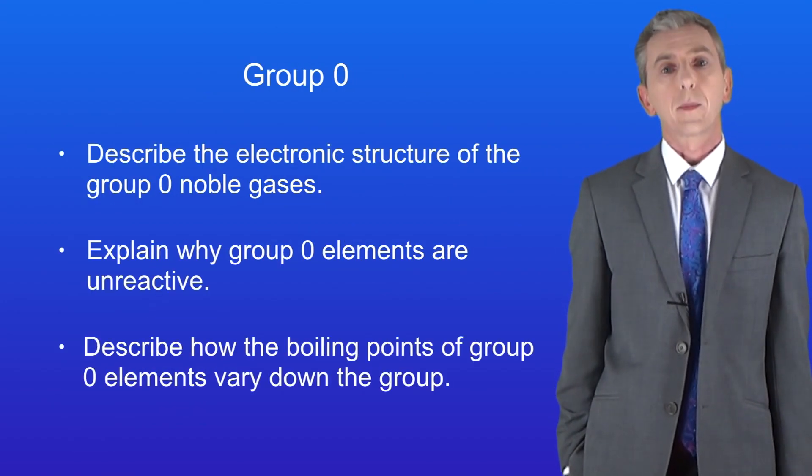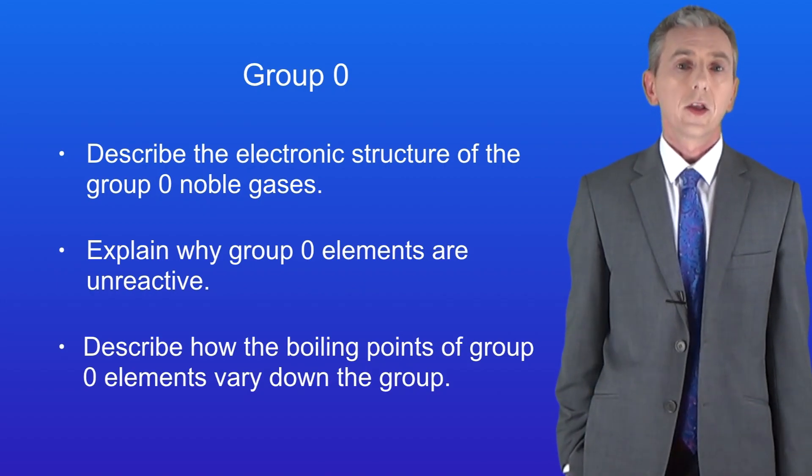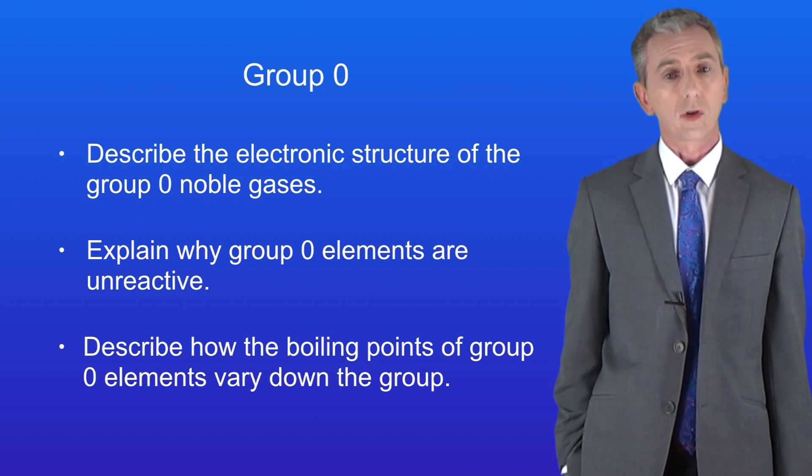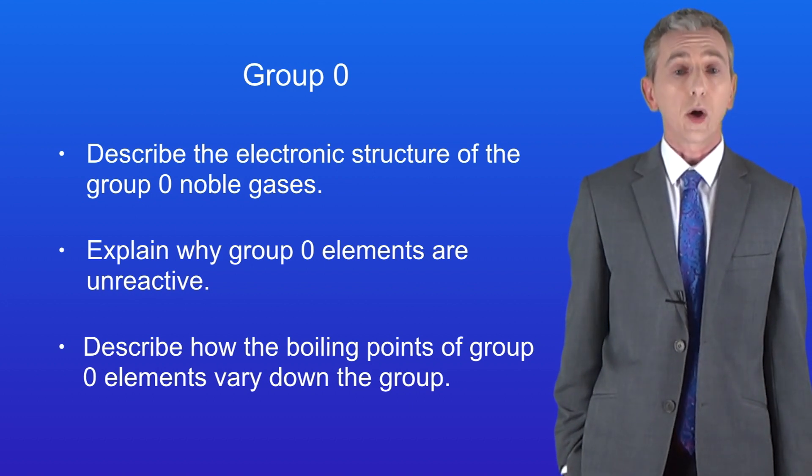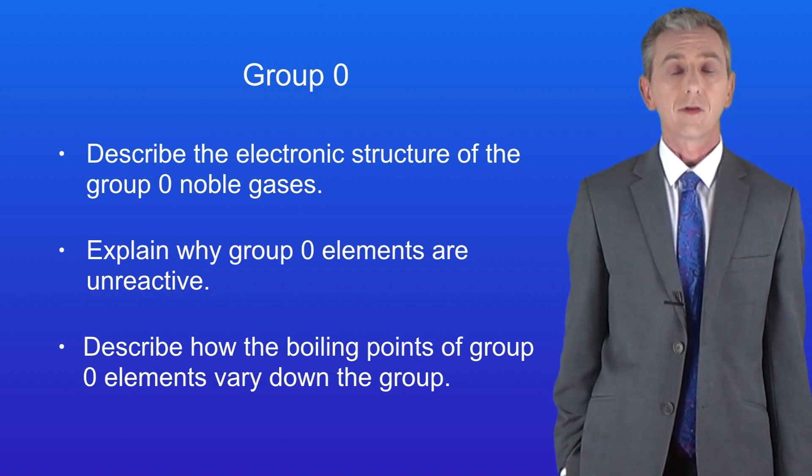Okay so hopefully now you should be able to describe the electronic structure of the group zero noble gases. You should then be able to explain why group zero elements are so unreactive and describe how the boiling points of the group zero elements vary down the group.